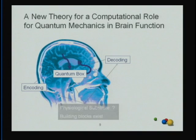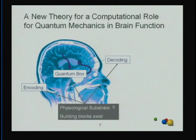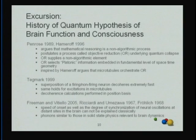To offer a complete theory I should say something about the physiological substrate — how is the quantum box realized in the brain? Frankly, my theory is not complete in the sense that I'm not in a position to offer what the physiological substrate could be. However, we will see that there are numerous building blocks identified in biology that could very well serve to construct a system of this nature. But first, let's do a historical review of the quantum hypothesis of brain function and consciousness.